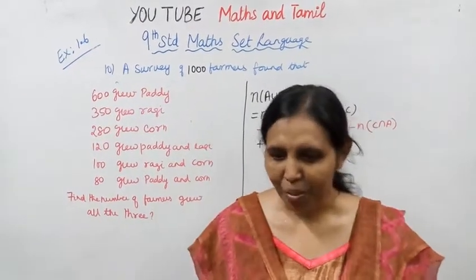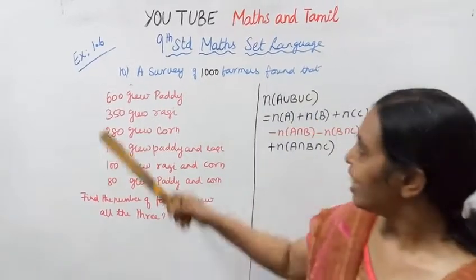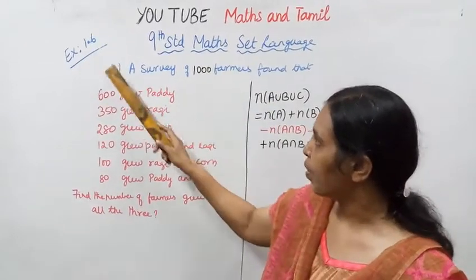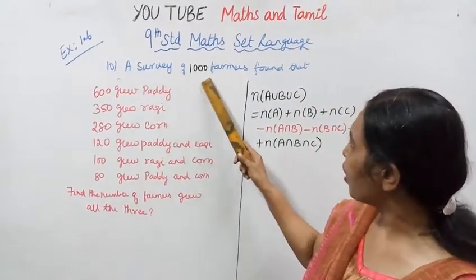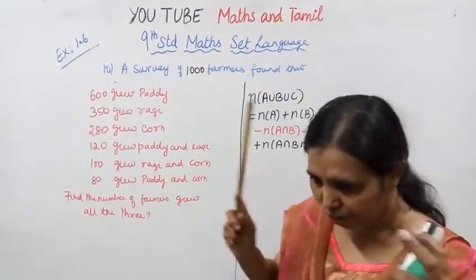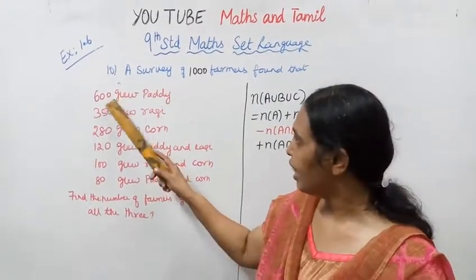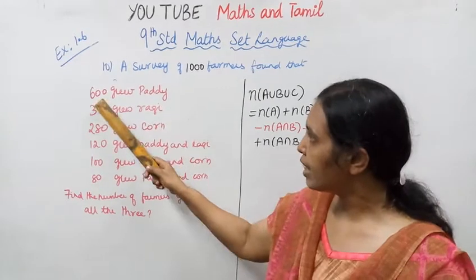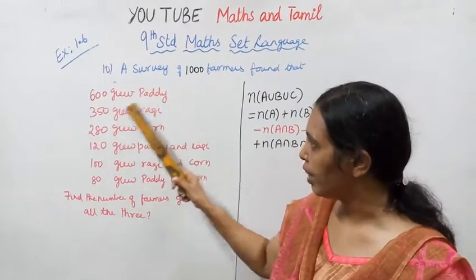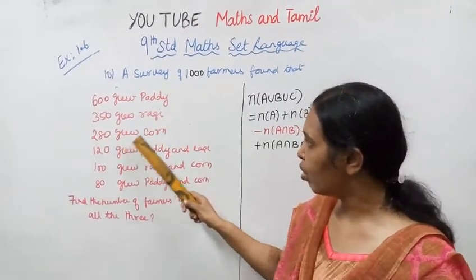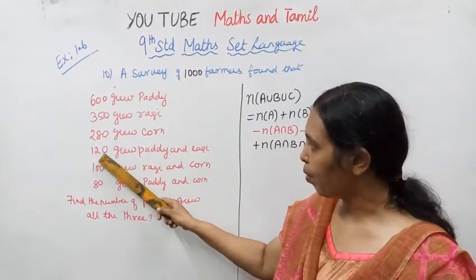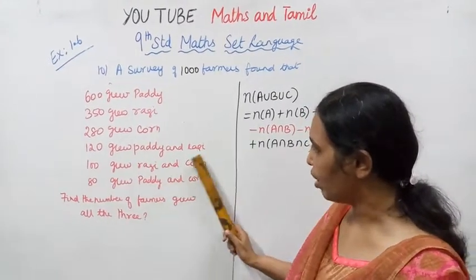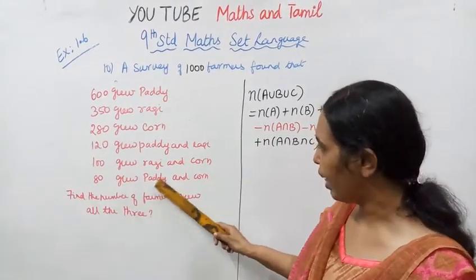Hello students, welcome to Max and Damit channel. Exercise 1.69, standard set language. A survey of 1000 farmers found that 600 grew paddy, 350 grew ragi, 280 grew corn. 120 farmers grew paddy and ragi, 100 farmers grew ragi and corn, 80 farmers grew paddy and corn.